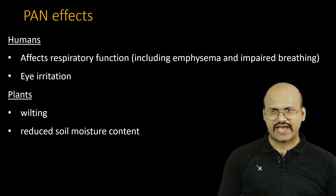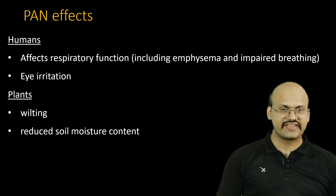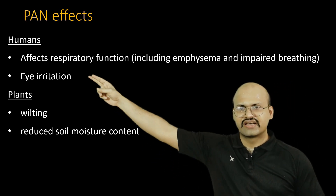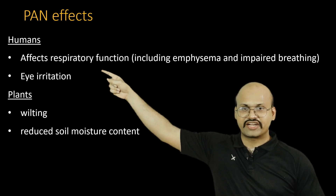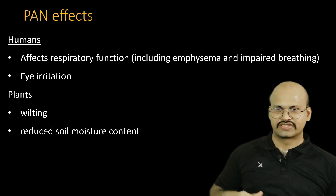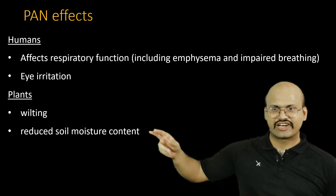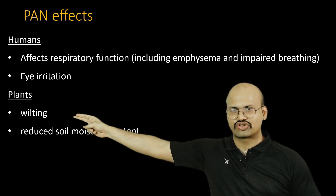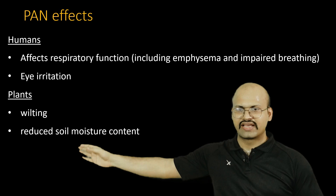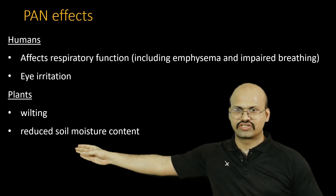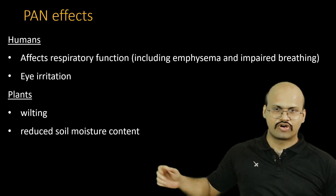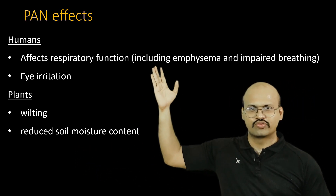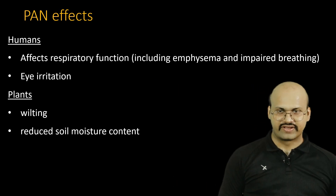PAN is a very important secondary pollutant. It affects respiratory functions in humans and can also cause eye irritation. In plants it causes wilting and reduces soil moisture content. So PAN affects both plants and humans in a negative way.